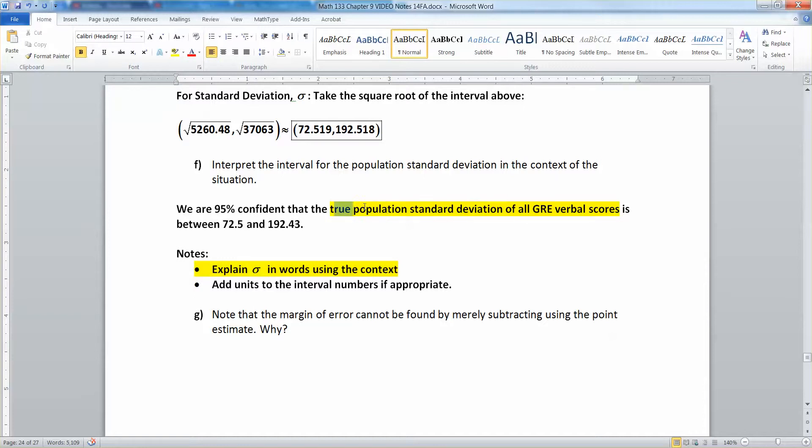Now I highlighted this yellow part here because I wanted to say what I was doing. I'm explaining what sigma is in words using the context of the situation. You don't want to just say I'm 95% confident sigma is in there because you have to explain what sigma is. It's the population standard deviation of all, in this case, GRE verbal scores.